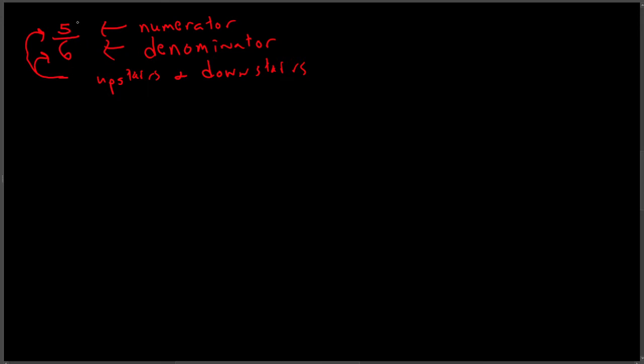The downstairs is how many parts our whole thing was cut into and our upstairs is the thing that was cut apart. So this is saying I've taken five things and I've cut it into six parts. No, that's not right. How would I want to say that?